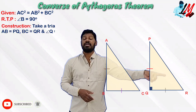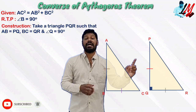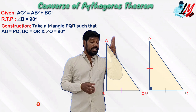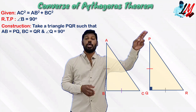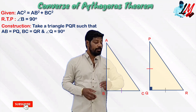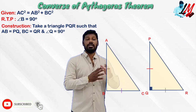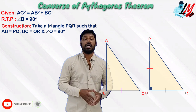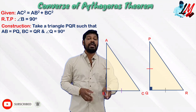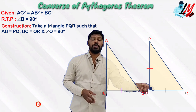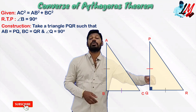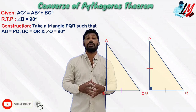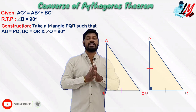So, one right triangle PQR has been constructed such that AB equals PQ, BC equals QR, and angle Q is 90 degrees.